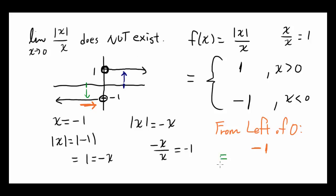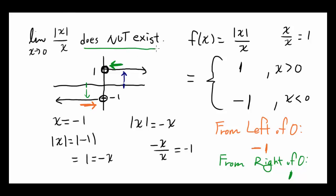Now let's look at it from the right of 0. As we're getting closer and closer to 0 from the right, it's going to seem like the limit is 1. As we're approaching from the left, it's going to be negative 1. As we approach from the right, it's going to be 1. If the limit from the left and the limit from the right are not the same — if they are not equivalent — we are going to say the limit does not exist.